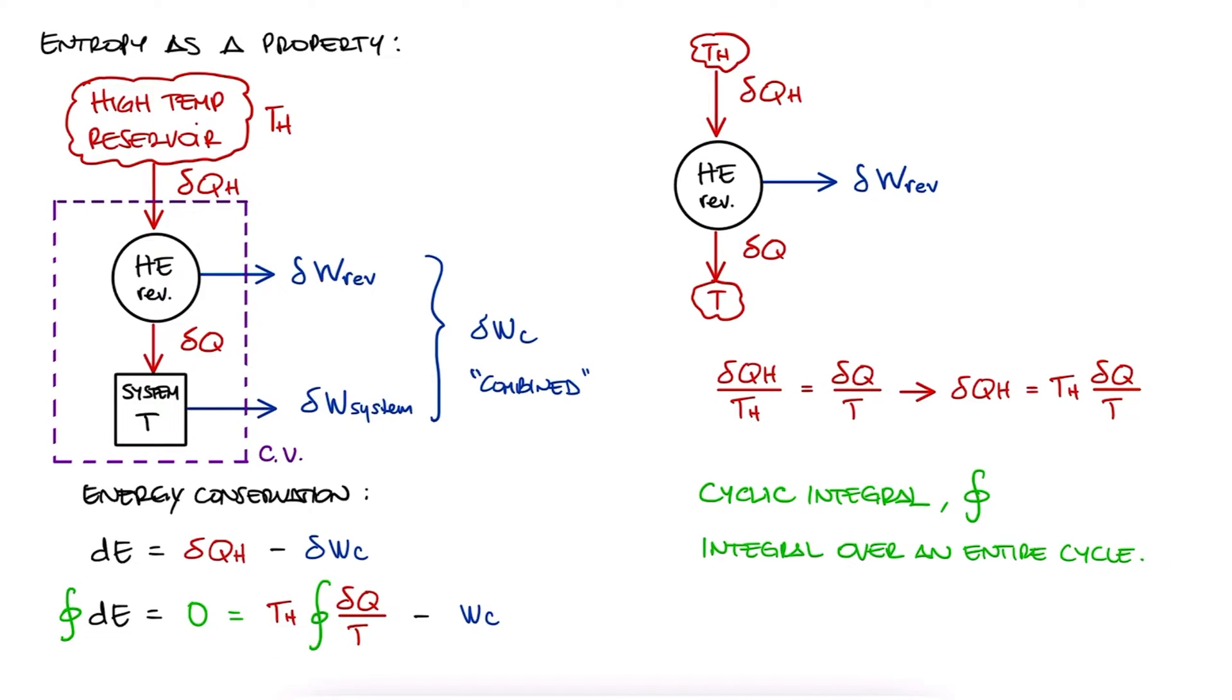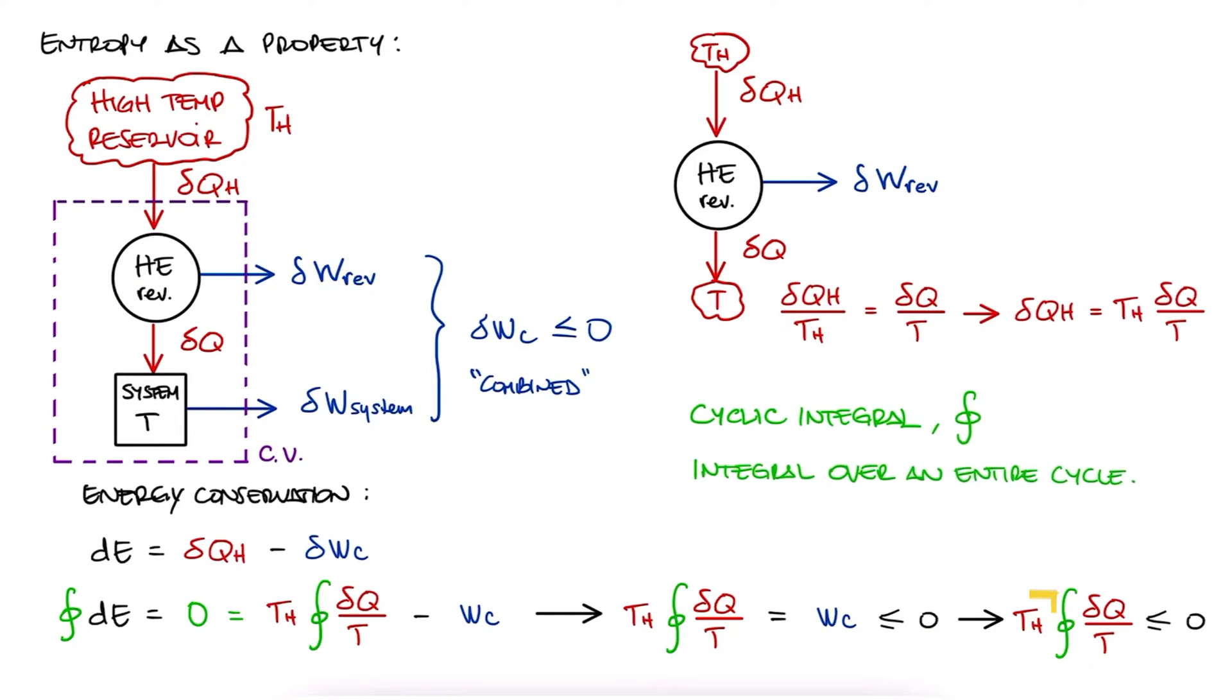And now, since we know that this system cannot exist, we know that the combined work cannot be greater than zero. And therefore, the cyclic integral cannot be greater than zero. Remember that the temperature is in Kelvin, so it will always be positive. This is called the Clausius inequality. The integral is exactly zero for completely reversible processes and lower than zero for real, irreversible processes.